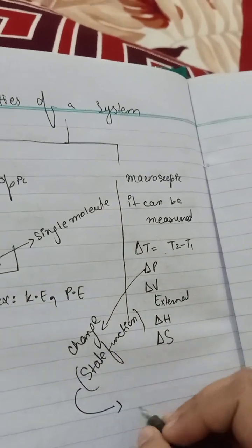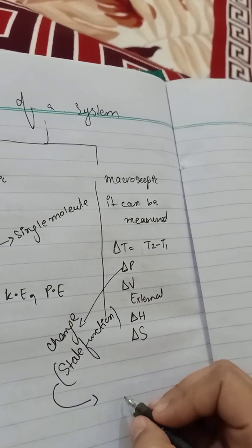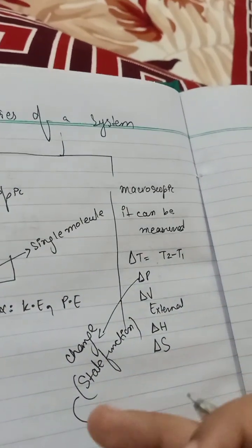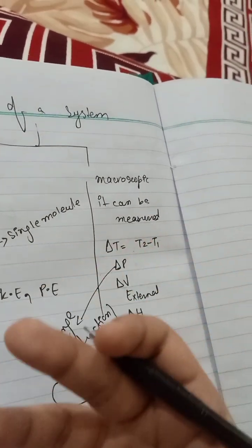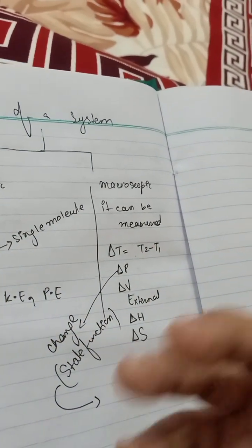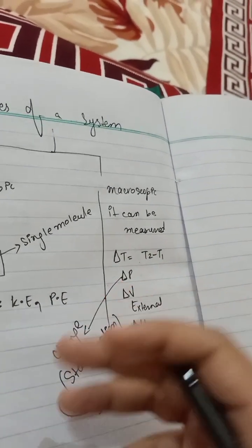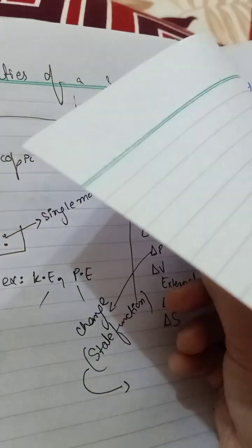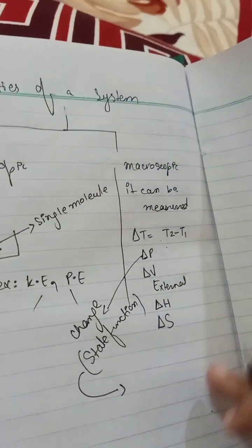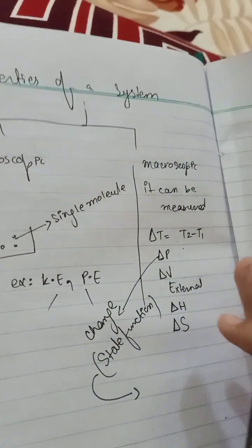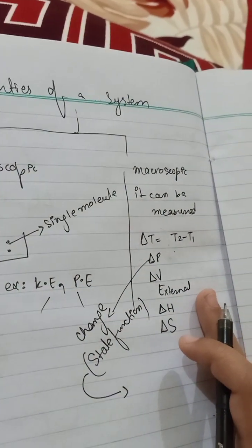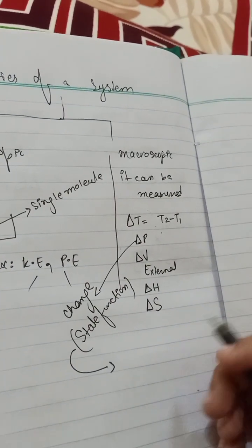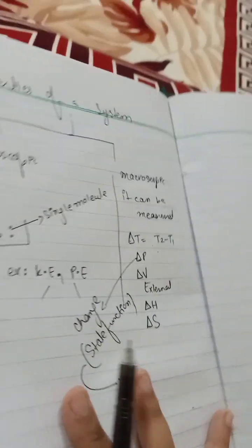So microscopic properties are the state functions or variables. What does it mean by state function? You have an initial state and a final state — there is a change in the system. This macroscopic property depends on the initial and the final state. This is having the initial state and this is having the final state. So this is about the macroscopic properties.